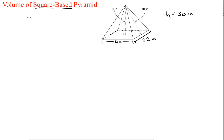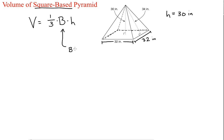So let's write this down. The volume formula for a square-based pyramid is equal to one-third times capital B times the height. Capital B is the most critical part of this formula — it doesn't just mean the base, it means the area of the base.